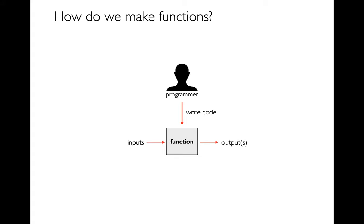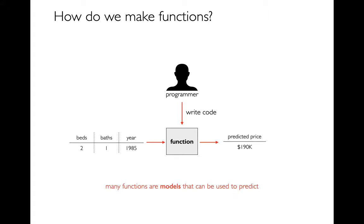There is a programmer and the programmer writes some code to produce a function. If you put some inputs to that function — some arguments — we're going to get some outputs, some sort of return value. You could imagine this looking like different things. I could say feed in a row, and maybe that row is describing some attributes of a house — like how many beds does it have, how many baths, and how many years. Then what is this function returning?